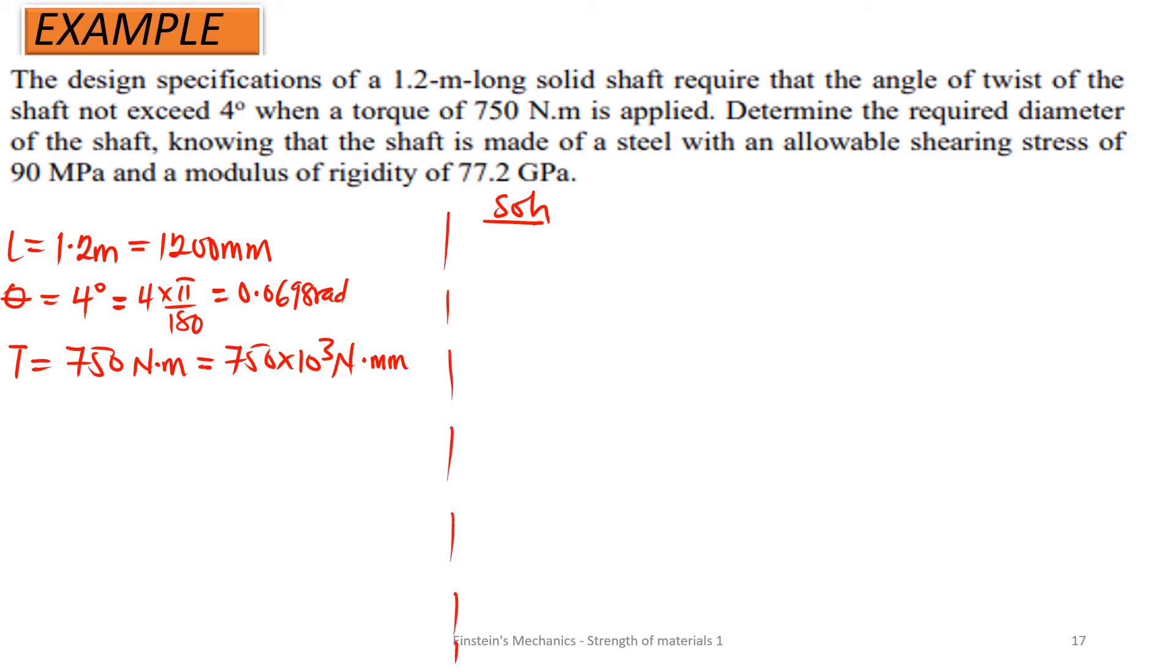We also have a torque T giving us 750 Nm, which is also 750 raised to the power positive 3 Nmm. We have the shear stress, which is 90 MPa, which is also 90 N per mm squared. And the rigidity G is 77.2 Giga Pascal, which is 77.2 kN per mm squared. We are looking for the diameter of the shaft D, which is equal to an unknown. So we have quite a number of parameters given.